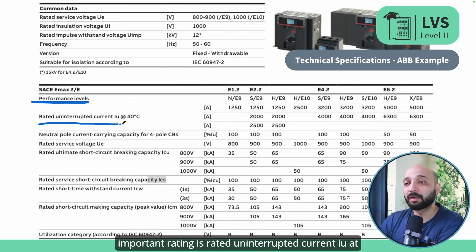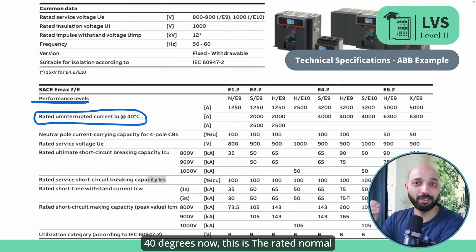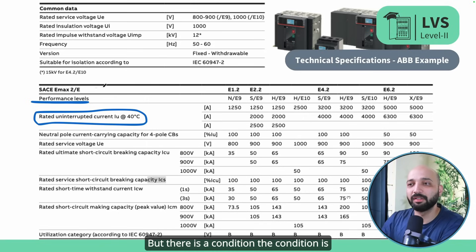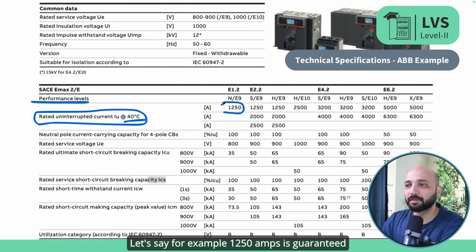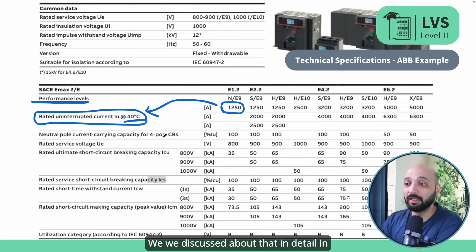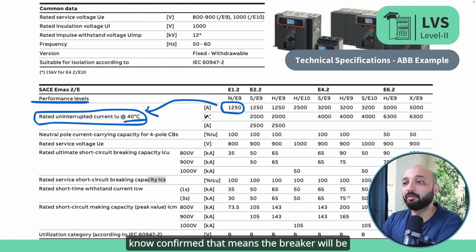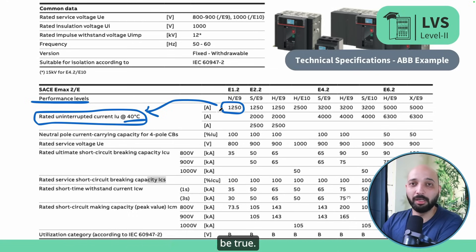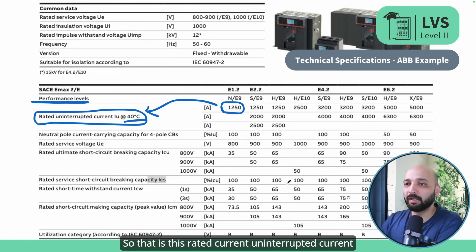The next important parameter is rated uninterrupted current, Iu, at 40 degrees. This is the rated normal current the breaker can carry continuously without any problem, but only at the rated ambient temperature of 40°C. For example, 1250 amps is guaranteed only at 40°C ambient. If your site temperature exceeds that, you need to consider a derating factor. Beyond 40°C, the breaker may not be able to carry the rated current without overheating, so derating must be applied.